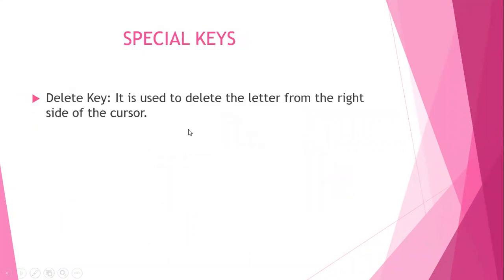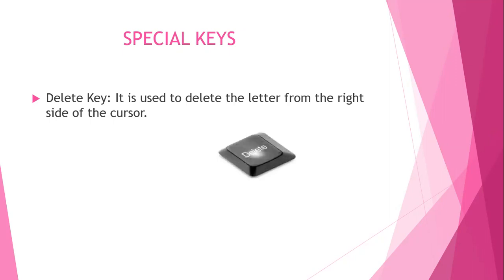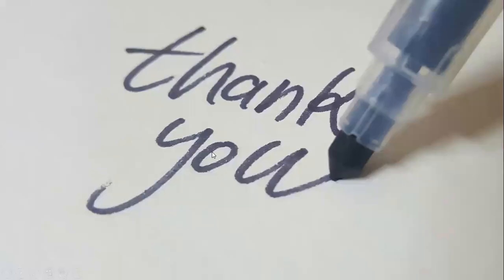Now we will see the next type of key — the delete key. It is used to delete the letter from the right side of the cursor. The backspace key deletes the letter from the left side of the cursor, while the delete key deletes the letter from the right side of the cursor. This is the picture of a delete key. This is all about your lesson. Thank you.